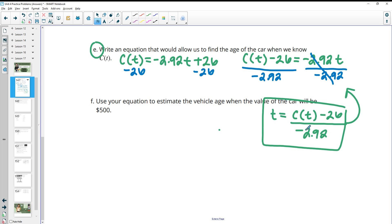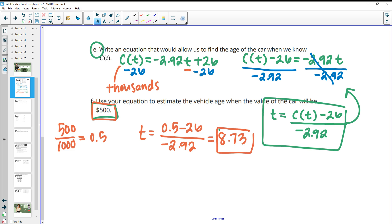Then it says to use that equation to estimate when the value of the car will be $500. So remember that this C(t) is in thousands of dollars. So how much is 500 in thousands? That's half of a thousand, because 500 divided by a thousand gives us 0.5. So we would want to plug 0.5 in. So we get 0.5 minus 26 divided by negative 2.92 again, or your equation. So if your equation is different than mine. And so when we do that, we end up with 8.73. So this is saying after about almost nine years, then the value of the car will be down to 500.